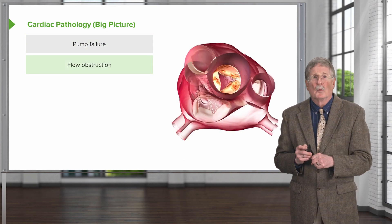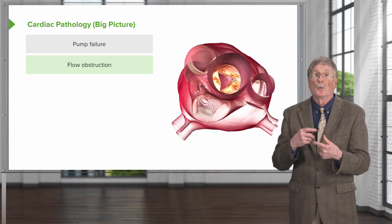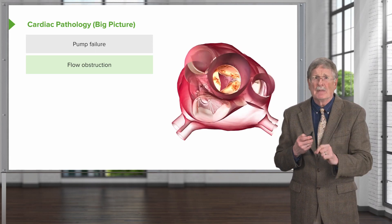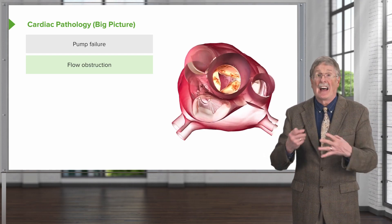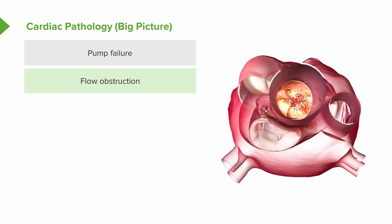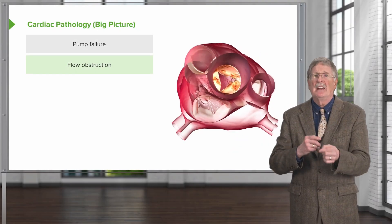The next major category is when the valves that are supposed to maintain unidirectional blood flow don't work appropriately. We're looking down onto the top of the heart, and right there in the middle is the aortic valve. That valve should open all the way to allow blood to flow out when the ventricle squeezes. In this case, we have a stenotic valve — flow obstruction. That will cause diminished perfusion of all the distal tissues, and the heart will have to work much harder to pump against that tight valve. So flow obstruction is another major cardiac pathology.